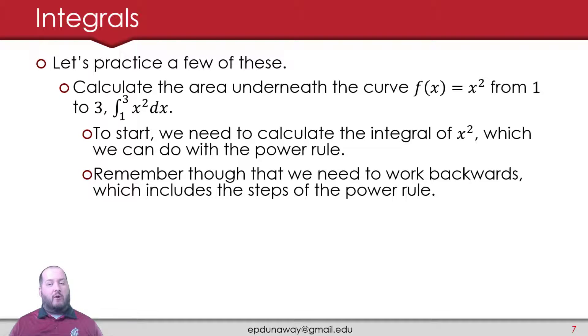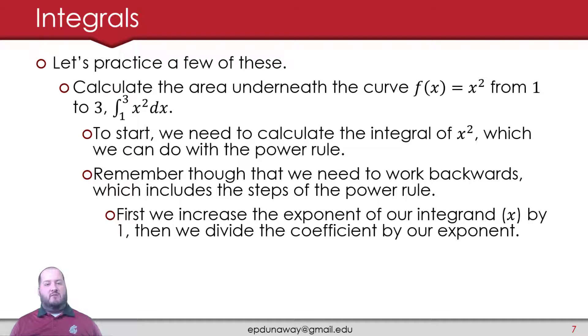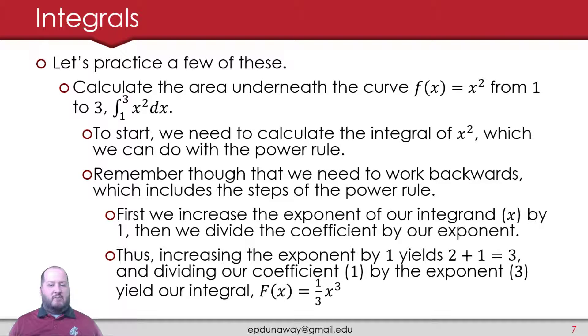When we're using the power rule, we need to work backwards, which includes the steps of the power rule. I have to do them in reverse order. To integrate this, the first thing I need to do is increase the exponent of our integrand, x in this case, by 1. Then we're going to divide by the coefficient of our exponent. Everything I was doing in the power rule, I'm now doing backwards. Where I multiplied, I divided. Where I subtracted, I now add. And I do it in backwards order. I change the value of the exponent first. I increase my exponent by 1, giving me x to the 2 plus 1 power, or x to the 3rd power. I divide my coefficient, which is just 1 in this case, by the exponent, which is now 3. That gives me my integral: capital F of x equals 1/3 x cubed.